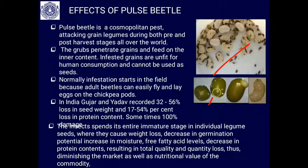Studies by Gujar and Yadav recorded 30 to 60 percent seed weight loss and 17 to 54 percent loss in protein content due to pulse beetle infestation. Sometimes they may cause 100 percent damage. This insect pest spends its entire immature stage within individual legume seeds, causing weight loss, decreased germination potential, increased free fatty acid levels, and decreased protein content.